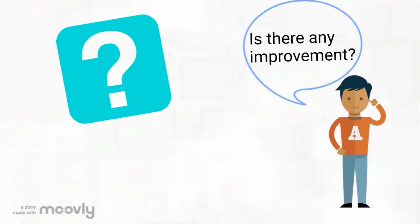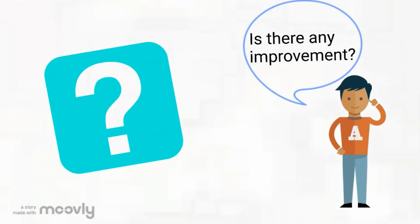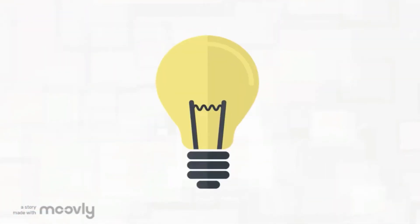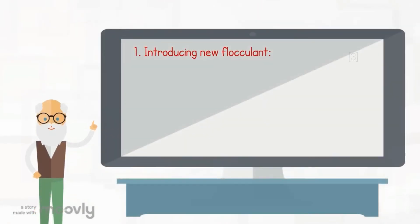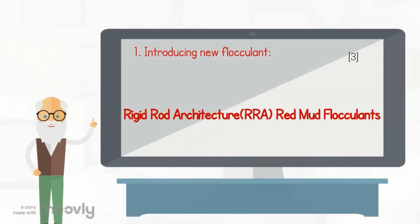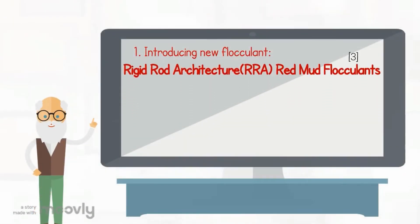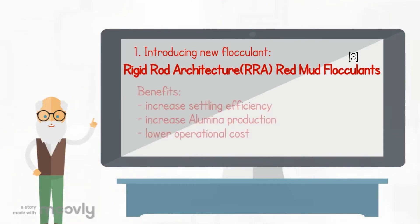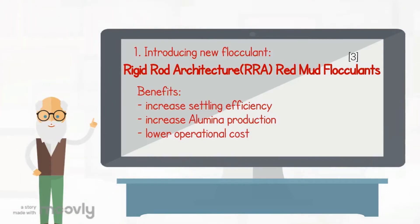Is there any improvement method? Of course there is. Rigid rod architecture red mud flocculant, also known as RATM flocculant, is being introduced to replace the conventional one. By using a flocculant suitable to high solid content separation, the settling process will happen faster in the clarification stage and increase the alumina production.